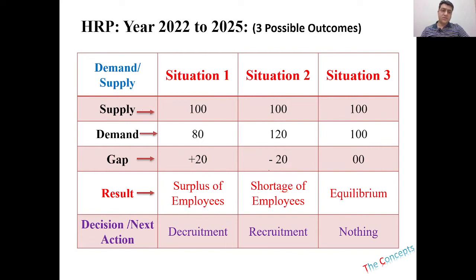The third situation is relatively simple: you have 100 employees as your supply and you will be needing 100 employees. It is not likely possible, but if this is the situation, then you have the equilibrium position.